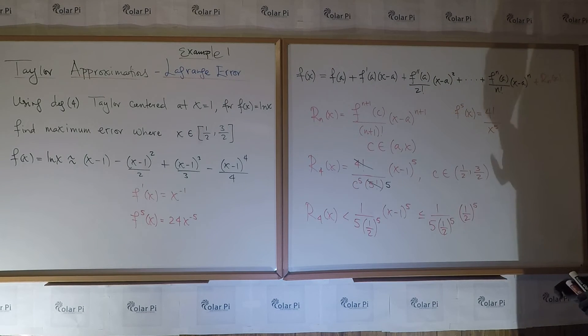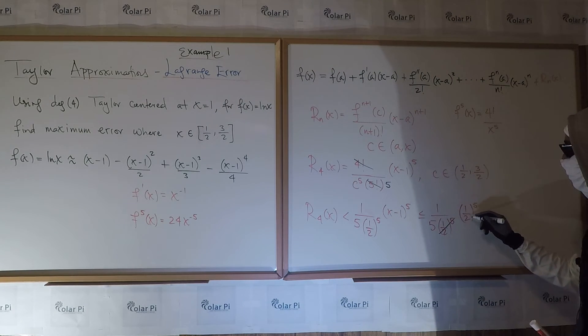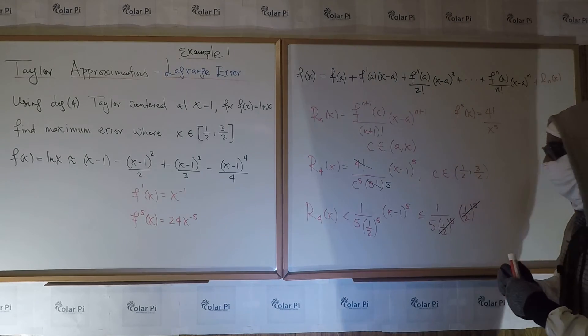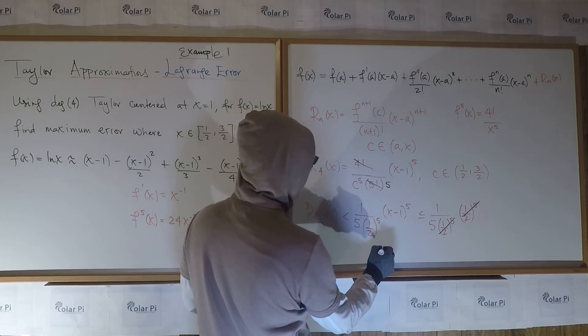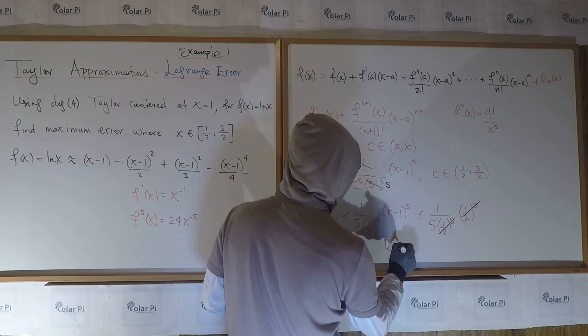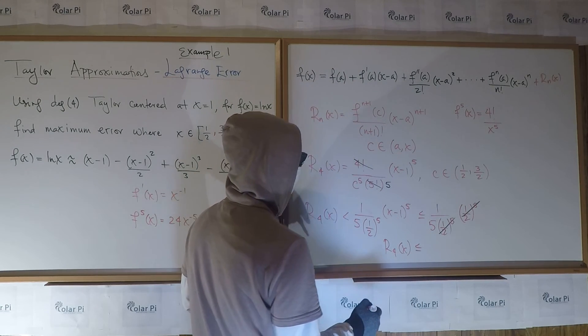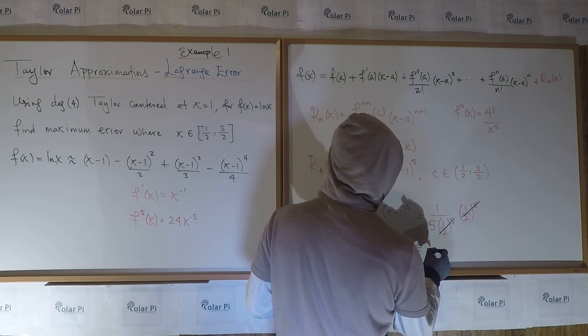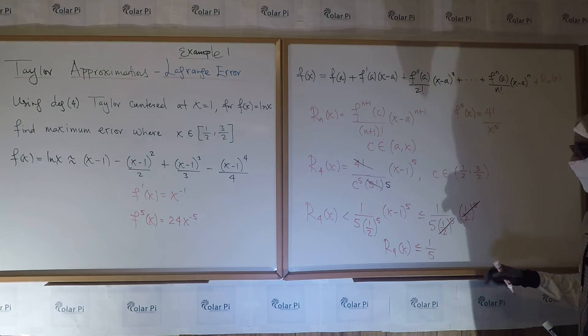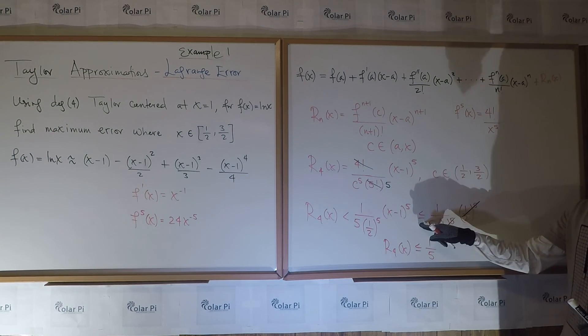Now look here. This is what I'm going to do. How convenient. Boom. Boom. So we see that r four of x is less or equal to less or equal to one-fifth.